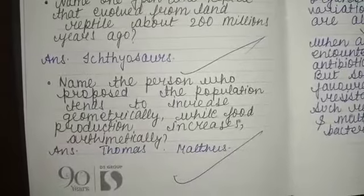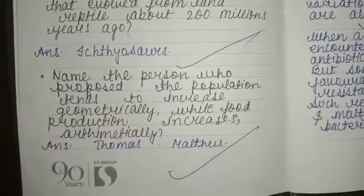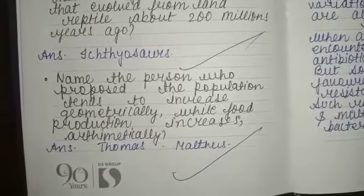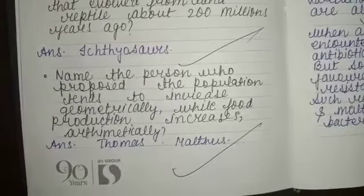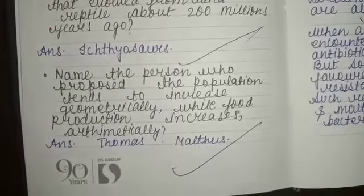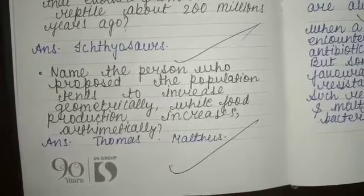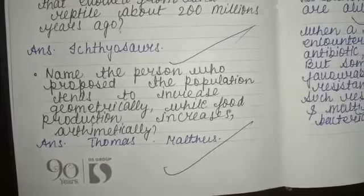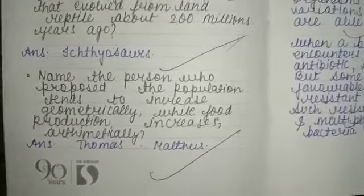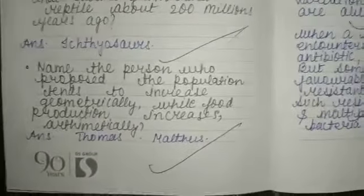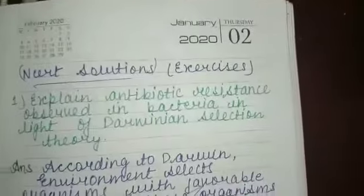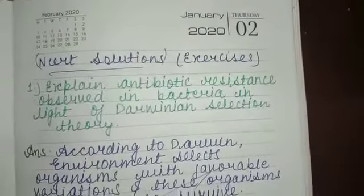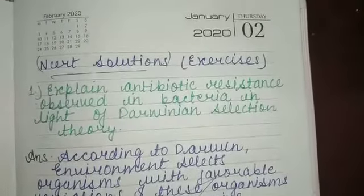Next question: Name the person who proposed that population tends to increase geometrically while food production increases mathematically. The correct answer is Thomas Malthus. Now we will solve some NCERT questions.